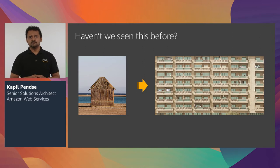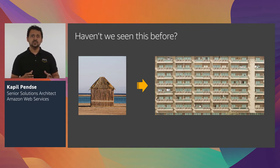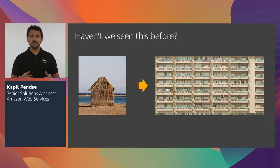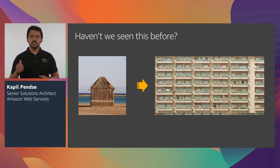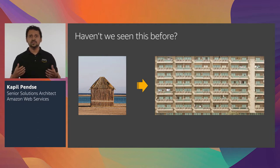Haven't we seen this before? If you're familiar with operating software at scale, then the answer is yes, we have. ML has evolved from a purely scientific research domain into an engineering practice. Looking back at the evolution of software development, we can draw many parallels. Years ago, computer science was a domain of pure scientific research, but today it has evolved into multiple engineering practices such as electronics engineering, software engineering, and so on.